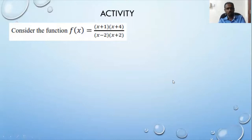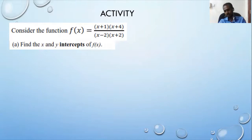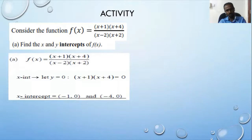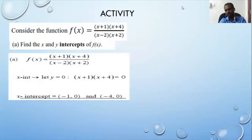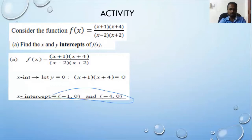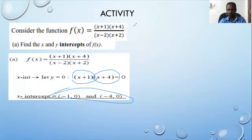Activity one: the function is f(x) = (x+1)(x+4) / ((x−2)(x+2)). To find the x-intercepts, put the numerator equal to zero. Numerator is (x+1)(x+4). Put x + 1 = 0: you get x = −1. Put x + 4 = 0: you get x = −4. These are denoted as (−1, 0) and (−4, 0) in coordinate form.